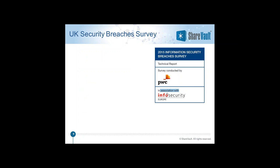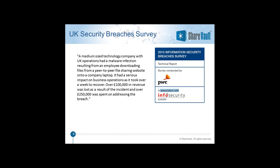Another example from the PricewaterhouseCoopers survey was about a company whose system was infected through a peer-to-peer sharing website — one of the file sync and share services. These are known as man-in-the-cloud attacks. You can find a report from the Imperva security company on that. In those peer-to-peer file sharing services, the weakest link is obviously the laptop or computer that's not on a protected server, which has the greatest vulnerability against information being accessed.